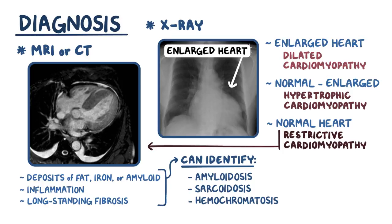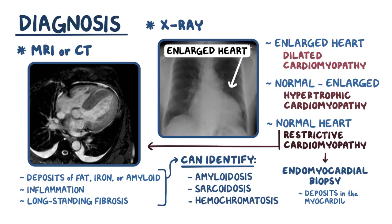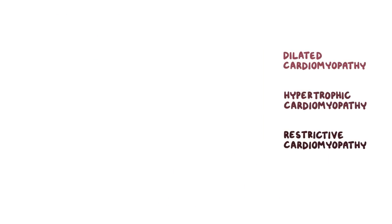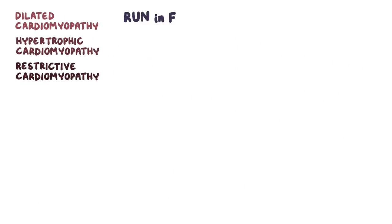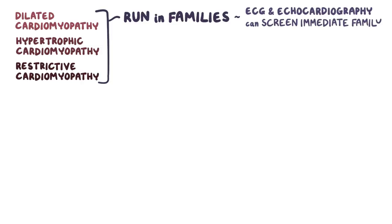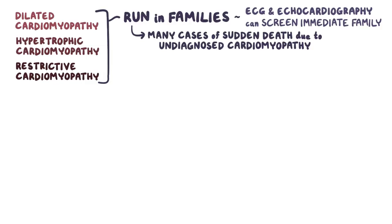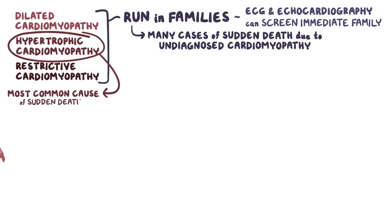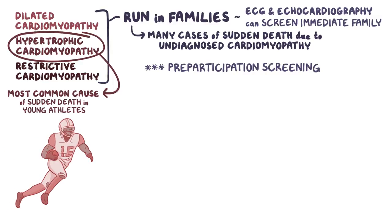Finally, in some individuals with restrictive cardiomyopathy, an endomyocardial biopsy can be done to look for deposits in the myocardium. All three types of cardiomyopathies can run in families, so if this is suspected, ECG and echocardiography can be done to screen the immediate family. That's particularly important, since many cases of sudden death are found on autopsies to be due to an undiagnosed cardiomyopathy. This is particularly relevant for hypertrophic cardiomyopathy, which is the most common cause of sudden death in young competitive athletes, and pre-participation screening programs that include an ECG and echocardiography are often used to avoid these tragic fatalities.